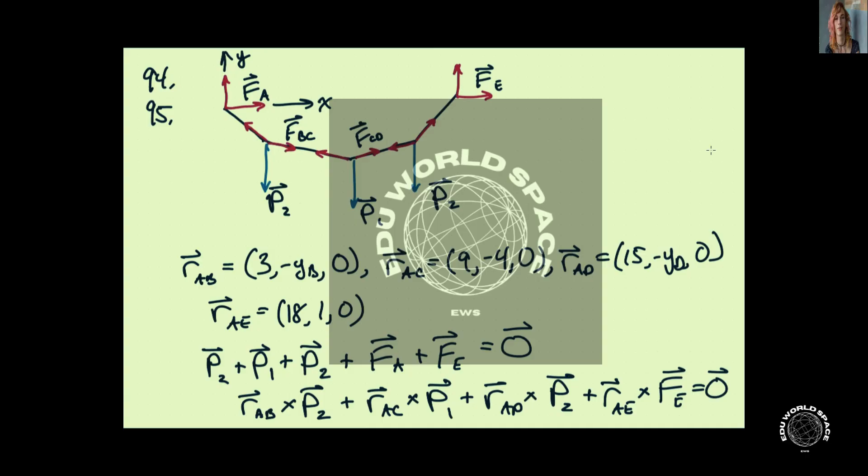So if we take the entire structure, or the entire cable here, you can see that we have our balance of forces. It gives us this, and we'll get two equations from there. One of the equations will just say Fex must be minus Fax. And then we can take moments about point A. So we get a moment from this load, a moment from this load, and a moment from this load, and a moment from this load. And we can set the sum of those equal to zero.